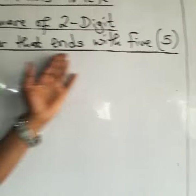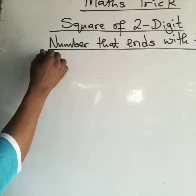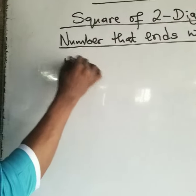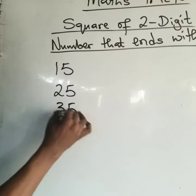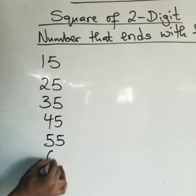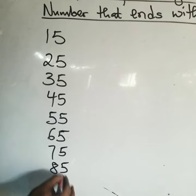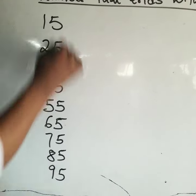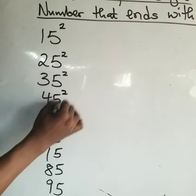Two-digit numbers that end with five are: 15, 25, 35, 45, 55, 65, 75, 85, and 95. And square simply means the number multiply each other—a number multiply itself.